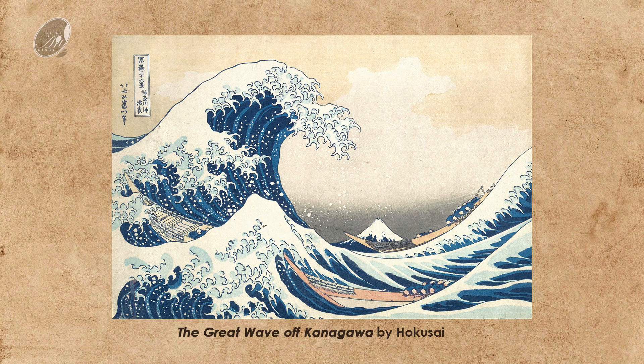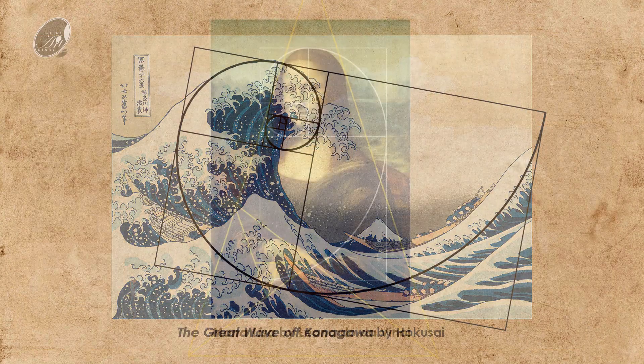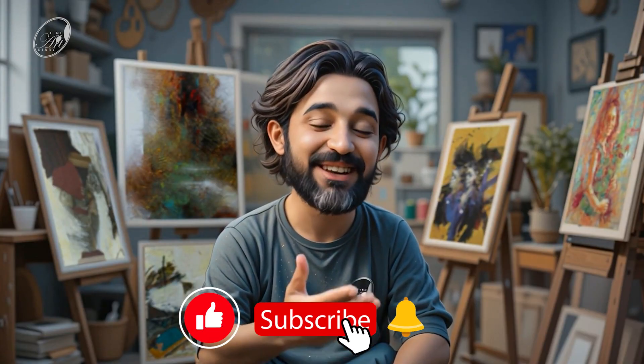In The Great Wave off Kanagawa by Hokusai, you can clearly see the spiral structure in the waveform. By arranging the elements of your artwork using the golden rectangle, spiral, or even the golden triangle, we can create compositions that are both beautiful and timeless. The golden ratio can be one of the best composition tools. Don't forget to subscribe to the channel because many more composition techniques are coming in the future. Thank you so much for watching.